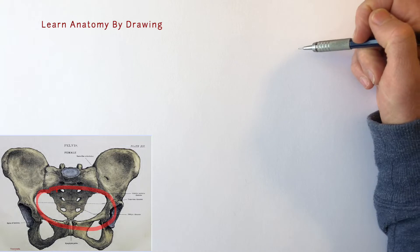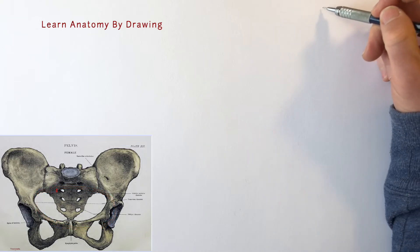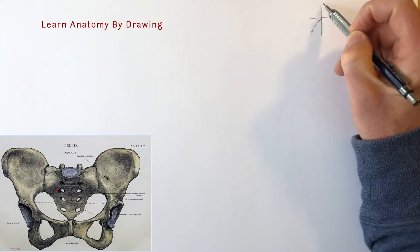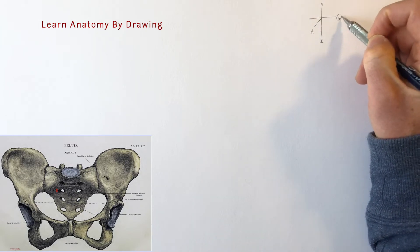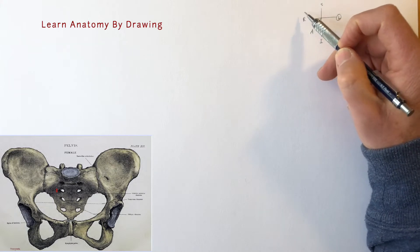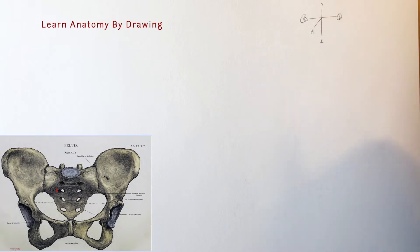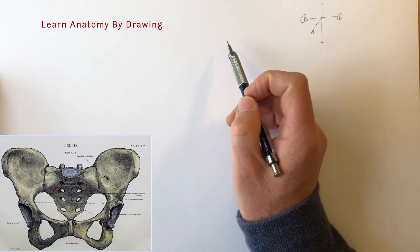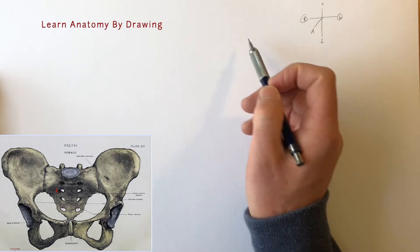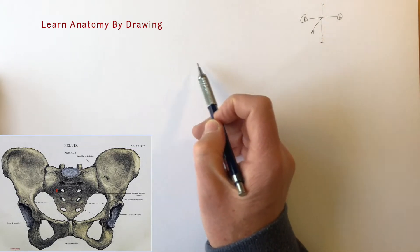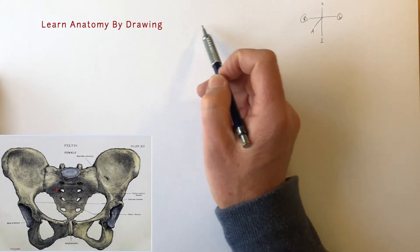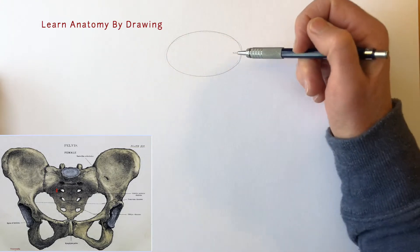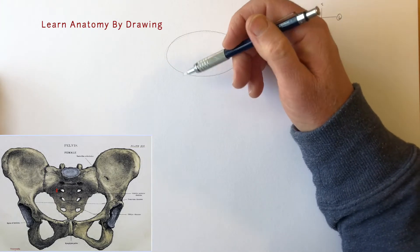As always we're going to start with our compass which orients us to our view. This is an anterior view with the superior aspect, inferior aspect, left hand side and right hand side. We're going to draw an ellipse by tracing without touching the pencil until we feel comfortable, then pop the pen down and go over it. It doesn't matter if it's perfect, we can clean it up later.